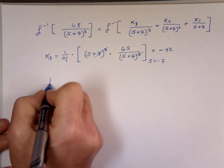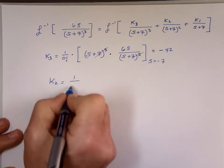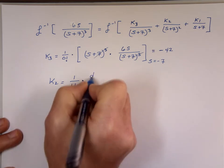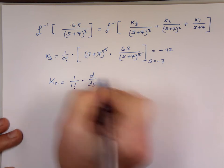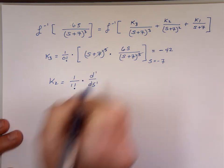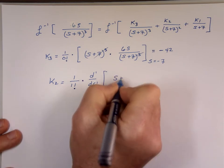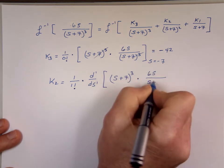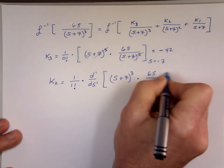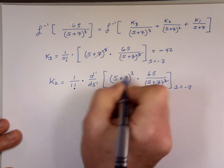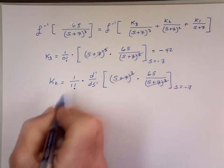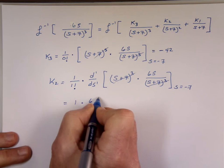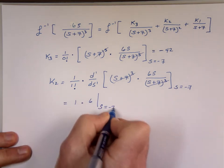To find k2, it's 1 over 1 factorial times the first derivative of s plus 7 cubed times 6s over s plus 7 cubed. What's the derivative of 6s? That's 1 factorial, which is 1, times the derivative of 6s, which is 6, evaluated at s equals negative 7. So k2 is 6.